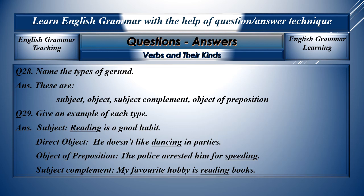Question twenty-nine: Give an example of each type. As a subject: 'Reading is a good habit' — reading is used as a subject. As a direct object: 'He doesn't like dancing in parties' — dancing is a direct object. As an object of a preposition: 'The police arrested him for speeding' — speeding comes after the preposition 'for'. As a subject complement: 'My favourite hobby is reading books' — reading is the subject complement completing the meaning of the subject.